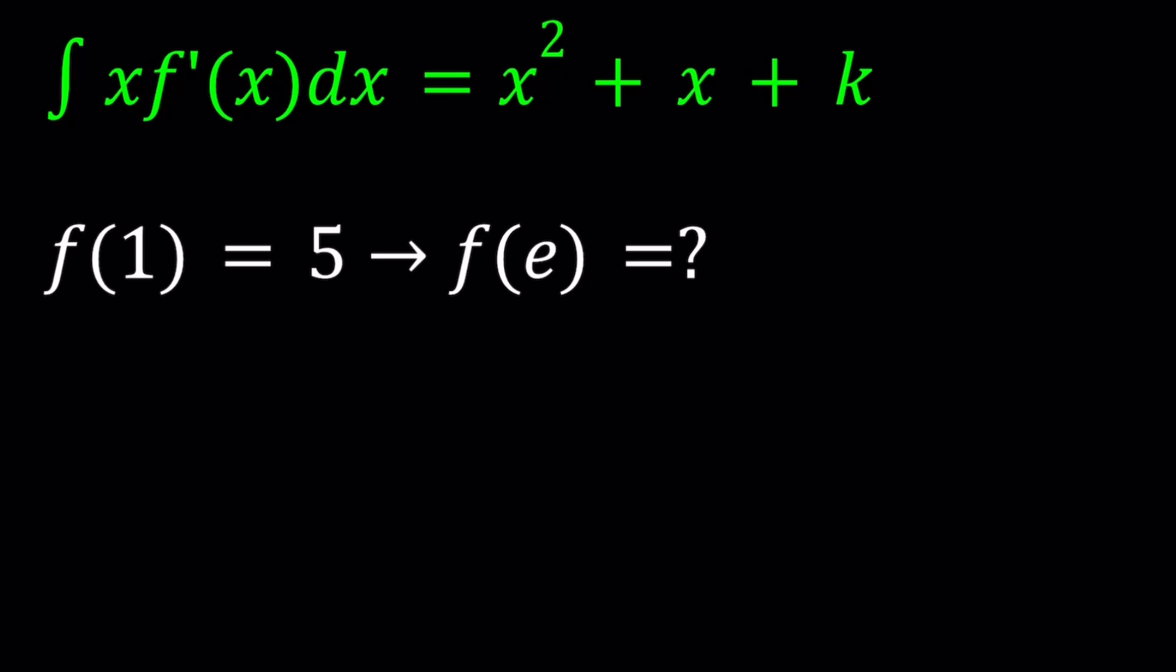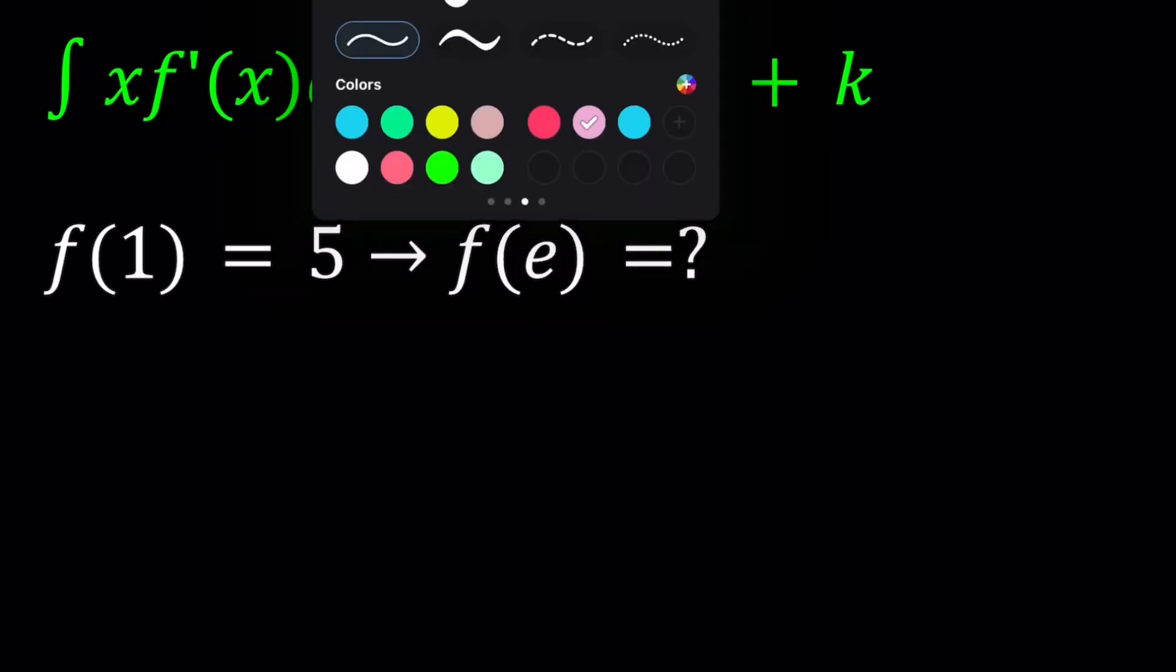You can also look at the integrand, which is x times f prime of x. You can use integration by parts, like u, dv stuff. But it's not really going to help you. It's just going to make it longer. So we're just going to differentiate both sides. Let's go ahead and do it.